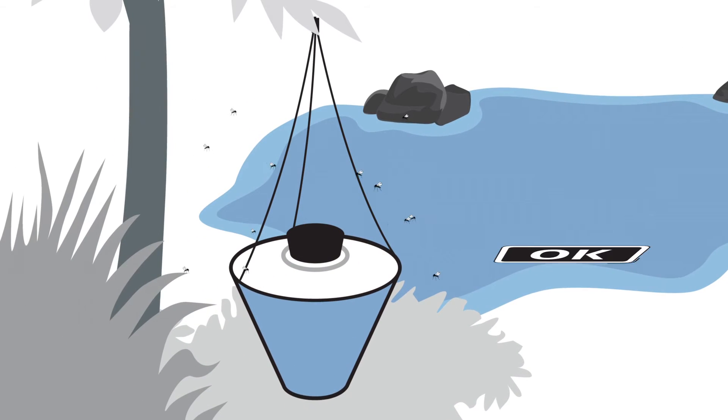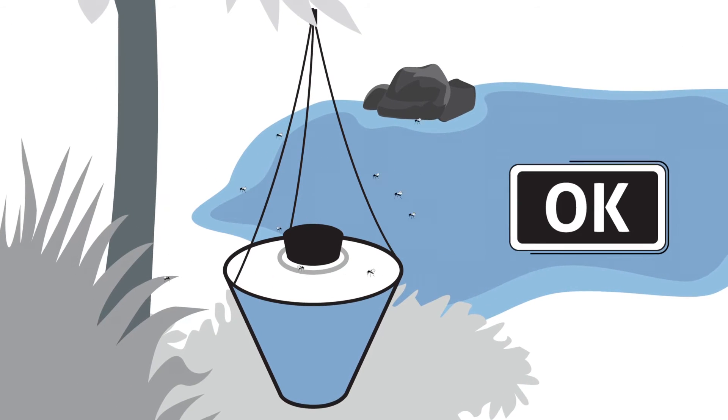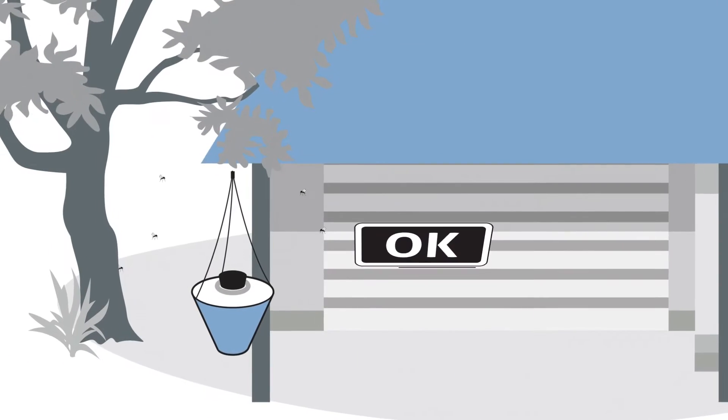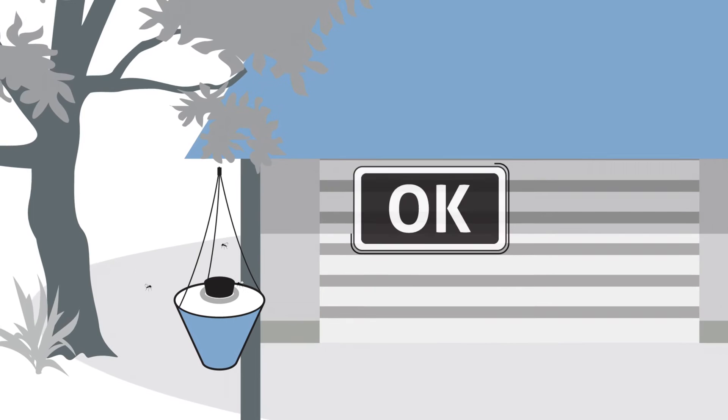Place traps near mosquito resting and breeding areas. In this way the trap will catch the mosquitoes before they reach you. You can also put them near your patio, balcony, or entrance areas.